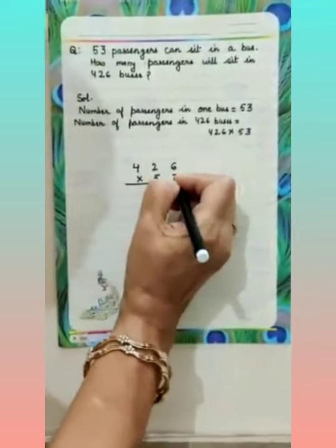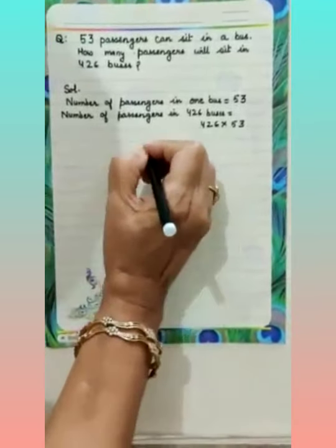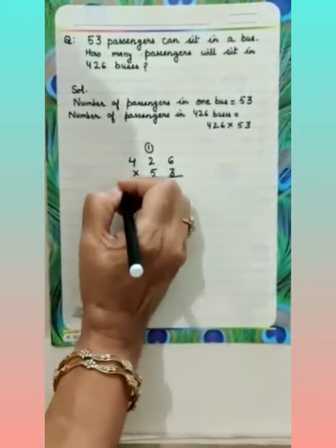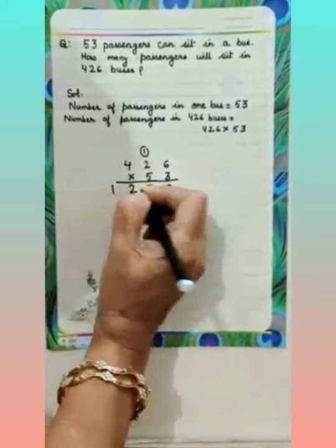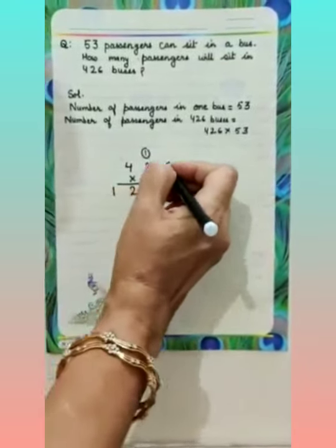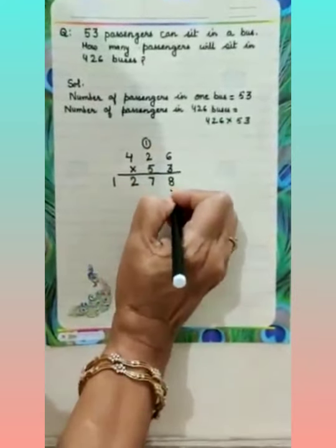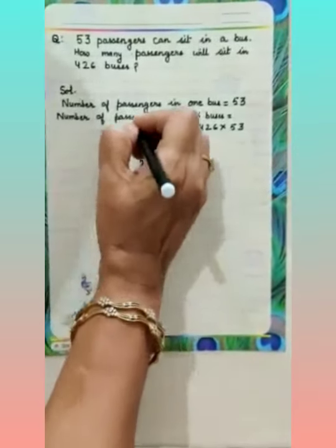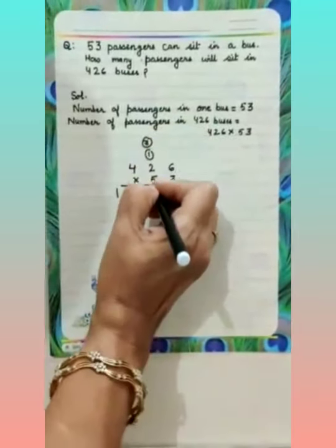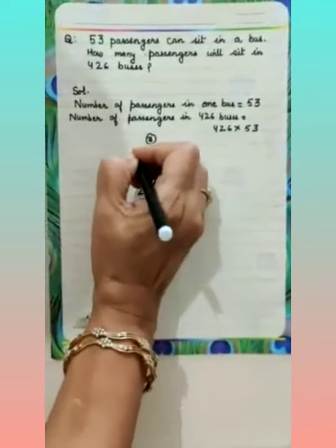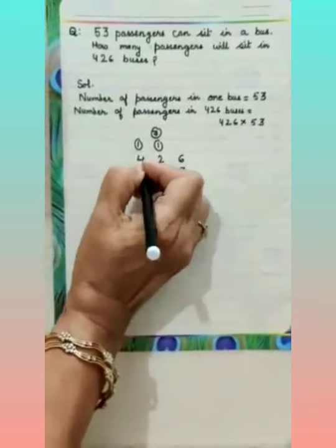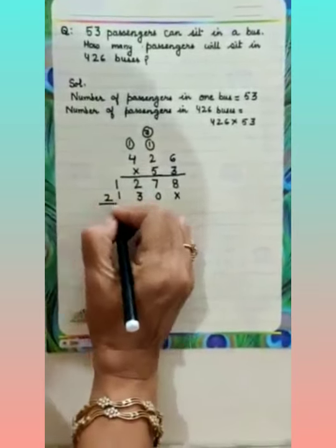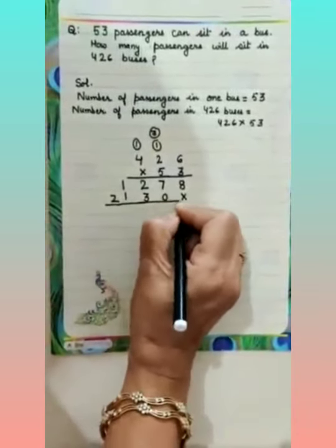Write 426 multiplied by 53. Starting with 3: 3 sixes are 18, 1 carry. 3 twos are 6 plus 1 is 7. 3 fours are 12. Always write numbers one below the other. Now for the tens digit: 5 sixes are 30, 3 carry. 5 twos are 10 plus 3 is 13, 1 carry. 5 fours are 20 plus 1 is 21. Now do the addition.